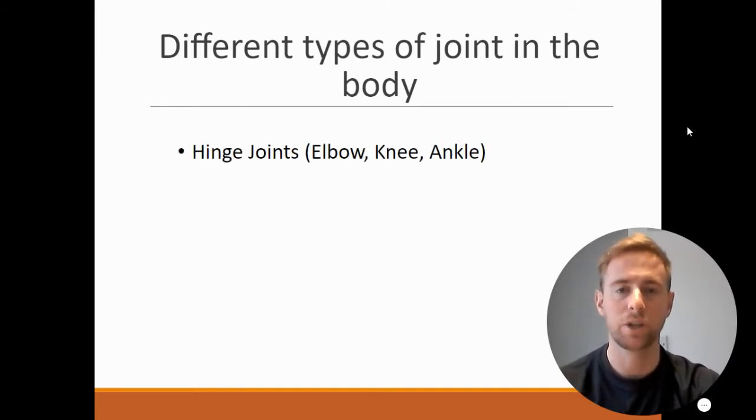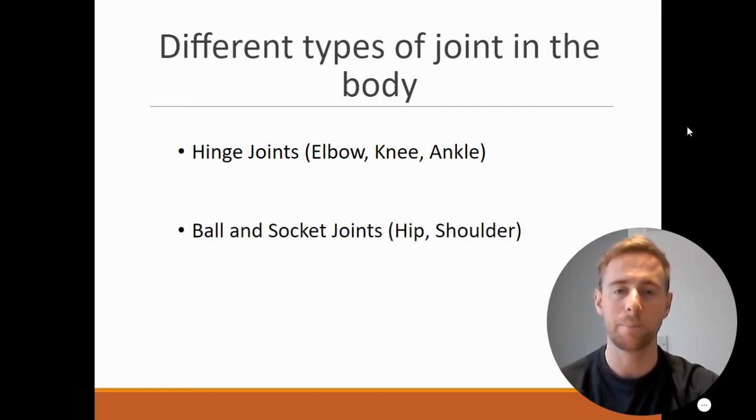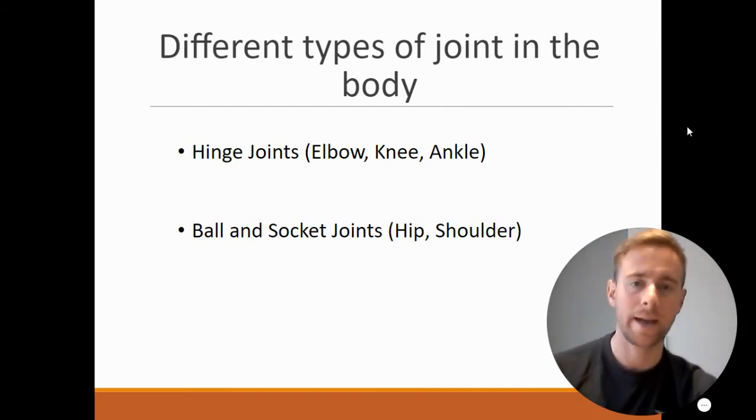We have hinge joints which are at our elbow, our knee, and our ankle. We also have ball and socket joints - that's our hip and our shoulder. So they're the two different types of joints. When we talk about synovial joint, we are talking about these joints: our elbow, our knee, our ankle, our hip, and our shoulder.